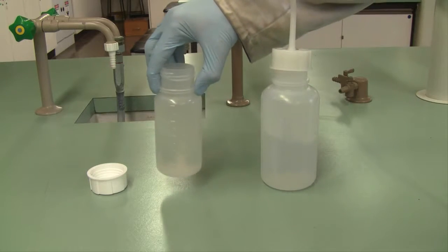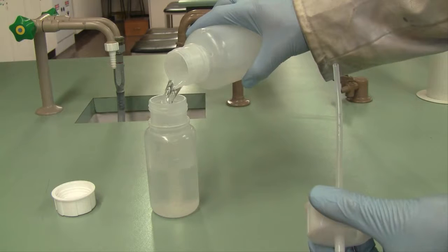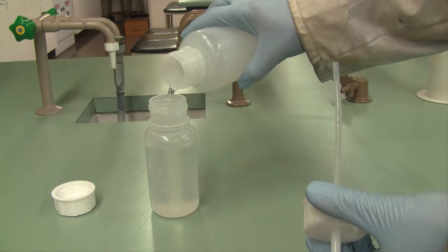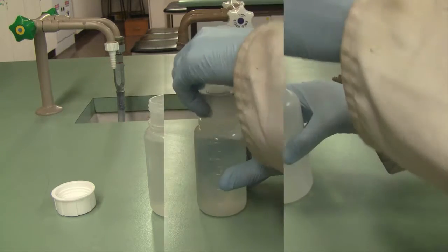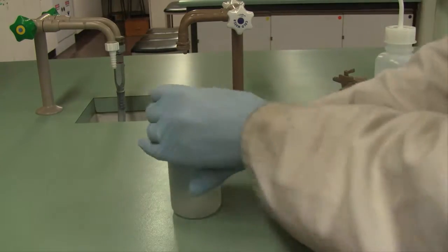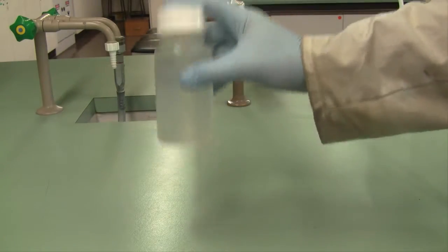Once they're dissolved, you can then add distilled water up to the 250 mil mark. Try to be as accurate as possible. Pop the screw cap back onto your reagent bottle and mix the solution thoroughly to ensure that you've got an evenly mixed 0.1 molar sodium hydroxide solution.